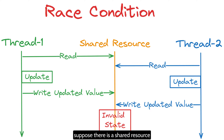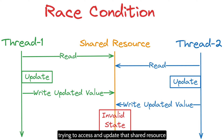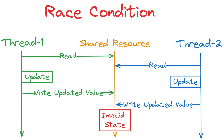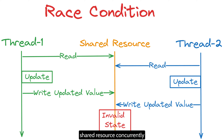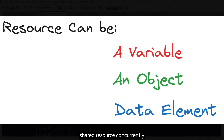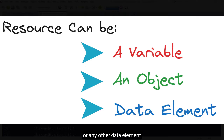Suppose there is a shared resource and we have multiple threads trying to access and update that shared resource. A race condition is a situation where those threads compete for access of the same shared resource concurrently. This resource can be a variable, an object, or any other data element that multiple threads can modify.